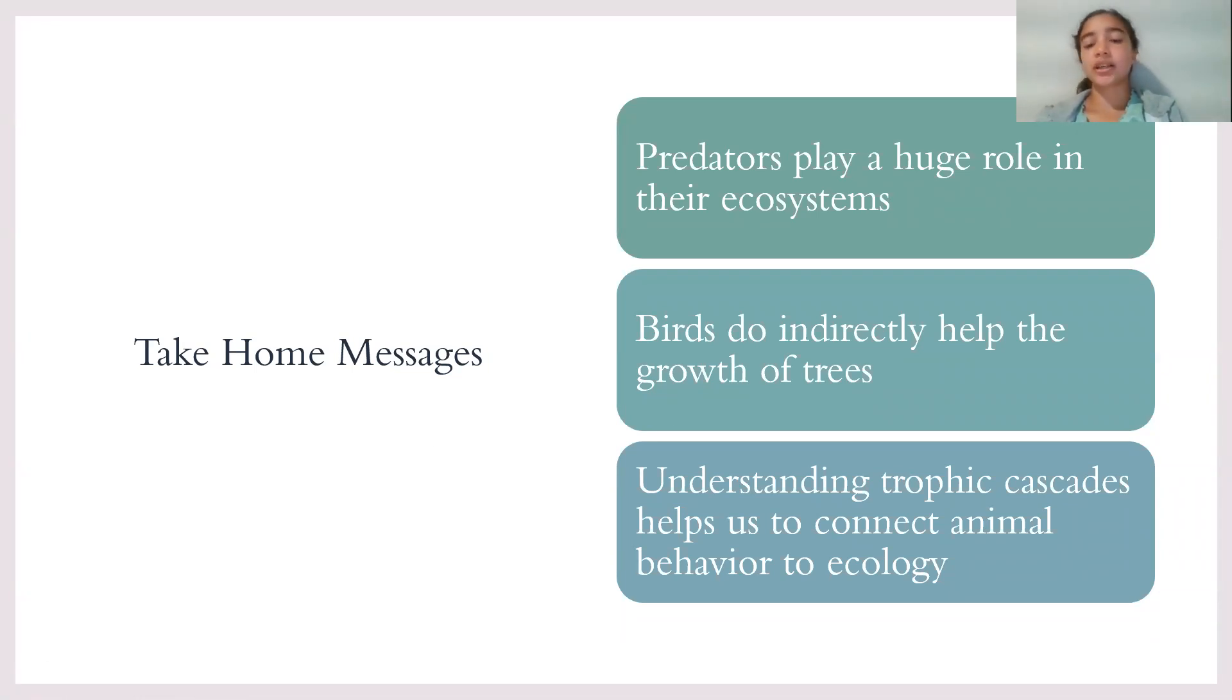My take home messages are that predators play a huge role in their ecosystems, because if a predator is not around, then there will be less primary producers or plants because there will be too many herbivores. There will be a bigger herbivore to plant ratio. The second one is birds do indirectly help grow the trees. Even though it was found that birds do not increase the vegetation, they do help with plant species richness or the cover, because less arthropods will be eating the leaves. And the last one is that understanding trophic cascades helps us to connect animal behavior to ecology.